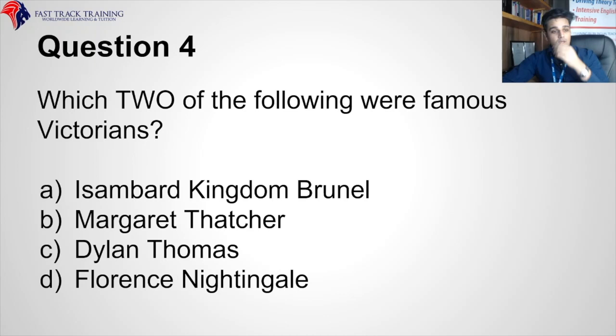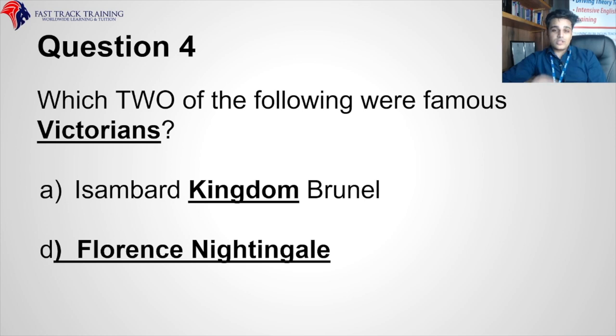Which two of the following were famous Victorians — Isambard Kingdom Brunel, Margaret Thatcher, Dylan Thomas, or Florence Nightingale? Remember the stories: one person stood next to chains and built the Avon Gorge bridge; another went to Turkey against her family's wishes and founded modern nursing. Answer: Florence Nightingale and Isambard Kingdom Brunel. Memory tip: Queen Victoria had a 'Kingdom' and 'Nightingales' — a bird.